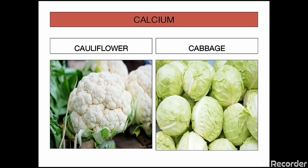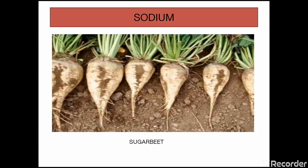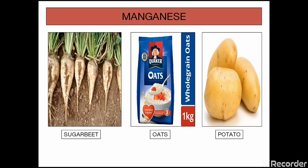You can also notice cabbage and cauliflower in case of nitrogen. And for magnesium, it is potato — and in case of potassium, it is potato again. In case of sodium, it is sugar beet, and for boron, it is sunflower. This boron-sunflower association is a question you can often get in many competitive exams. And in case of manganese, it is sugar beet, oats, and potato.